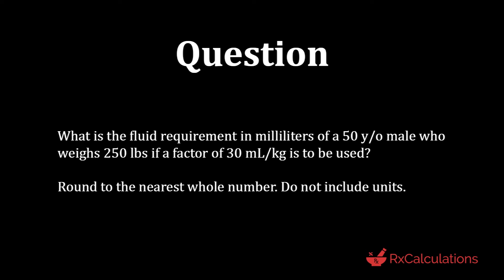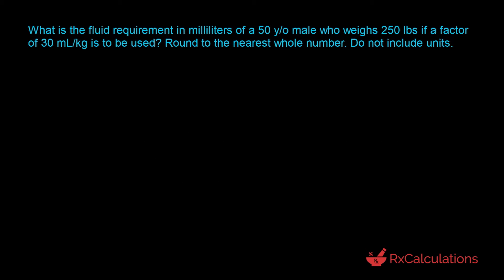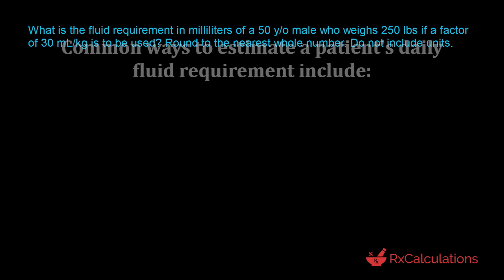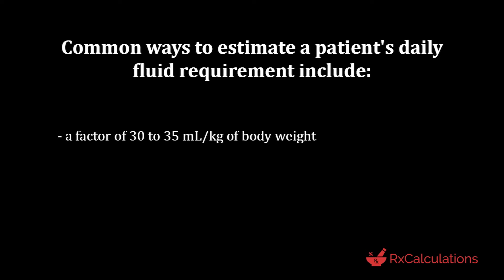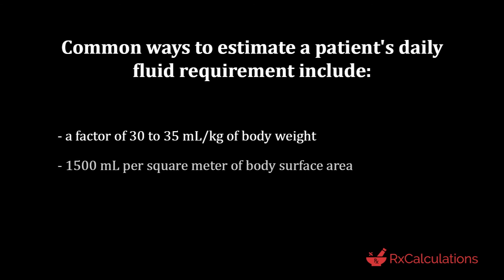This question says: what is the fluid requirement in milliliters of a 50-year-old male who weighs 250 pounds if a factor of 30 milliliters per kilogram is to be used? Round to the nearest whole number, do not include units. One common approach for TPN fluid requirement is the factor method, using 30 to 35 mL per kilogram of body weight. You could also use 1500 mL per square meter of body surface area. In this question, we use the factor method with 30 mL/kg.